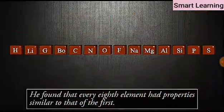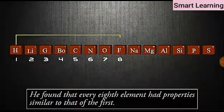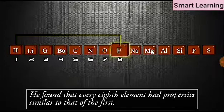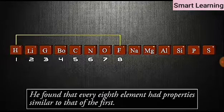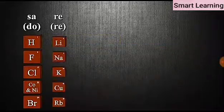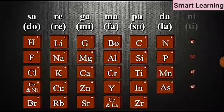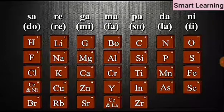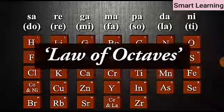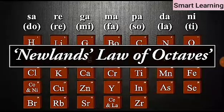He found that every eighth element had properties similar to that of the first. He compared this to the octaves found in music. Therefore, he called it the law of octaves. It is known as Newlands' law of octaves.